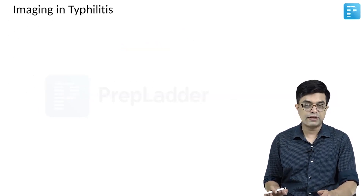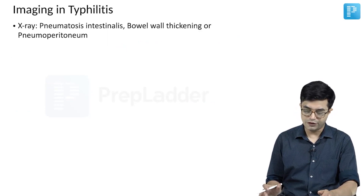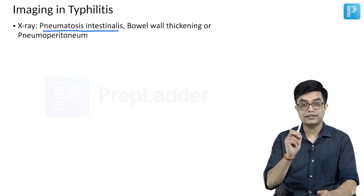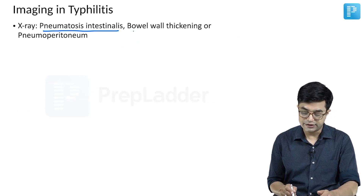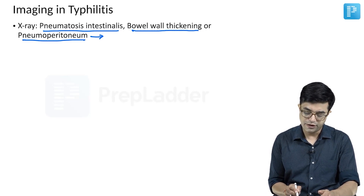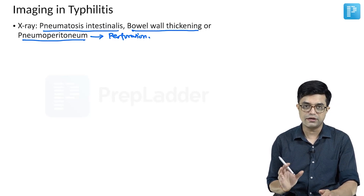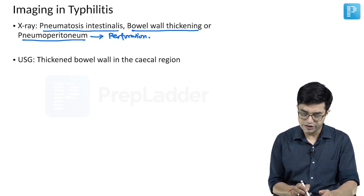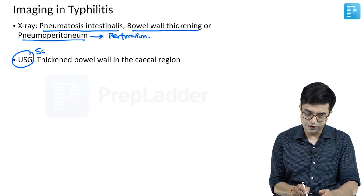How will you confirm the diagnosis? Imaging needs to be done. On X-ray, there will be features of pneumatosis intestinalis — that is air in the wall of the small intestine. There will be bowel wall thickening or pneumoperitoneum. Pneumoperitoneum will indicate perforation, appearing as air under the diaphragm. Ultrasonography will show thickened bowel wall in the cecal region. Ultrasonography is often used as a screening investigation in patients of Tiflitis.